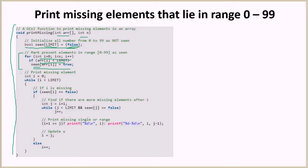After the mapping is done, then we execute this part of the code to print the missing elements. We initialize i with 0 as our index variable. Till i is less than limit, we see if seen[i] is equal to false. If that is the case, then we check if there are more elements, so we have a while loop that if there are more elements then we keep incrementing the value of j. J was initialized by i plus 1, so we keep incrementing the value of j till we find a true, then we just break out of this while condition.